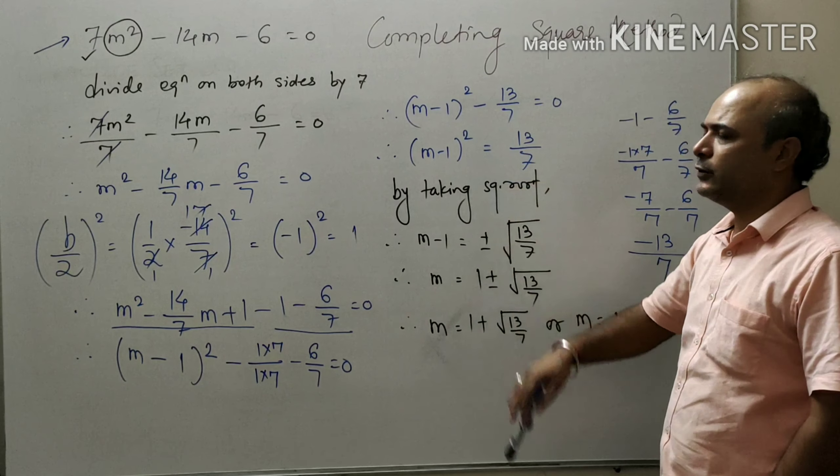Taking the square root: m - 1 = ± √(13/7), so m = 1 + √(13/7) or m = 1 - √(13/7). This is the solution of the given quadratic equation 7m² - 14m - 6 = 0. Thank you very much.